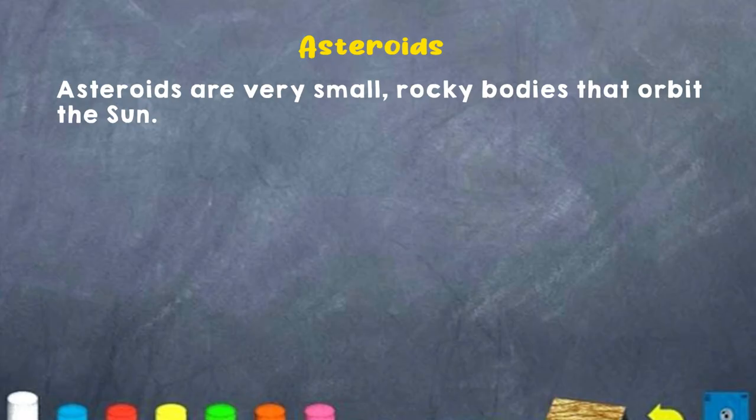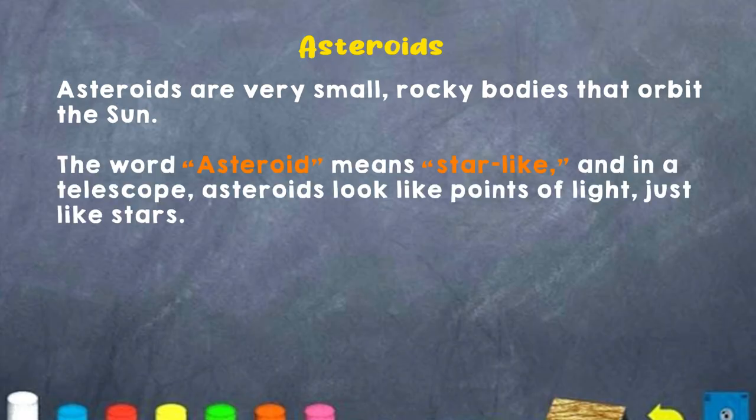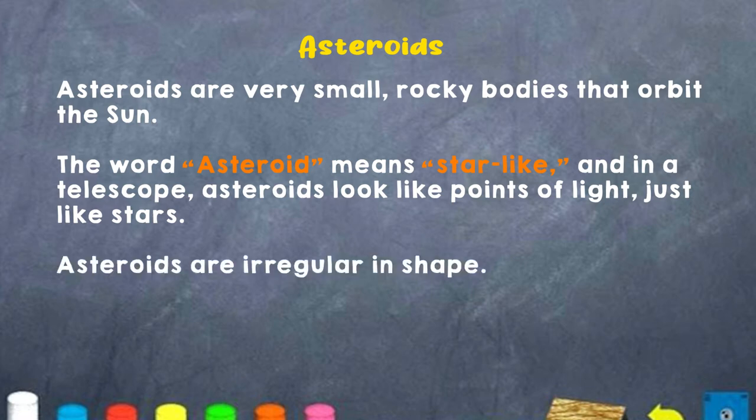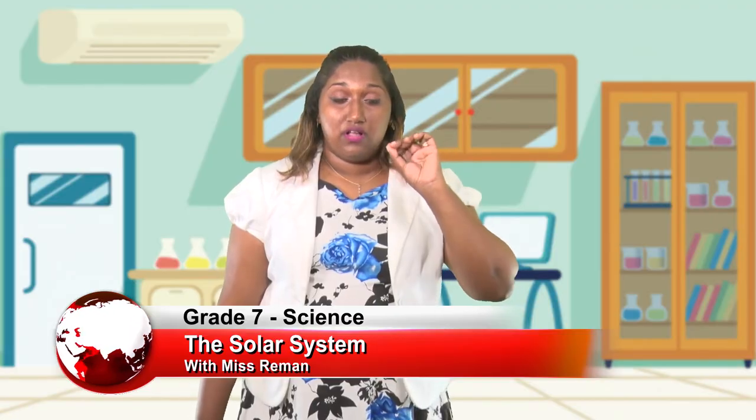Now, boys and girls, let us dive into the next member of the solar system — asteroids. Asteroids are very small, rocky bodies that orbit the sun. Asteroids mean starlight, and in a telescope, asteroids look like a point of light, just like stars. Asteroids are irregular in shape. If you look at the sky through a telescope, these asteroids will also look like stars and appear to be twinkling at us.